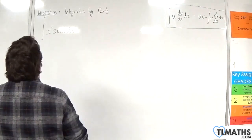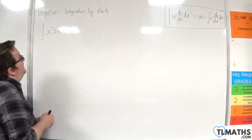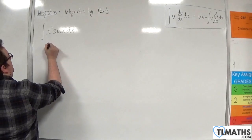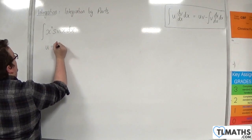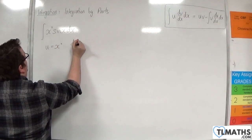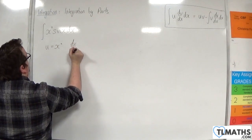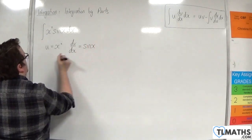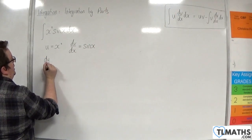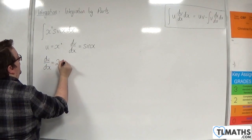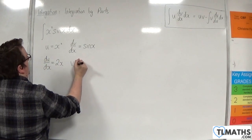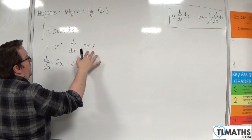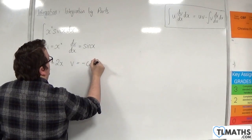Using the LIATE rule, we can identify that x squared has to be the u. So u equals x squared, and dv by dx will be sine x. Now we differentiate u with respect to x to get 2x, and we integrate dv by dx to get v. Sine x integrates to minus cosine x.